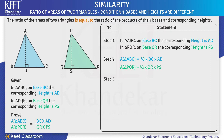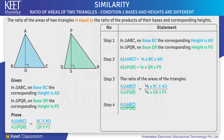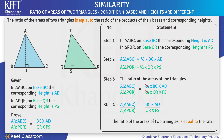Now in step 3, the ratio of areas of two triangles is: area of triangle ABC upon area of triangle PQR equals half into BC into AD upon half into QR into PS. On cancelling half, in step 4, we get: area of triangle ABC upon area of triangle PQR equals BC into AD upon QR into PS. Thus, the ratio of the areas of two triangles is equal to the ratio of the products of their bases and corresponding heights.